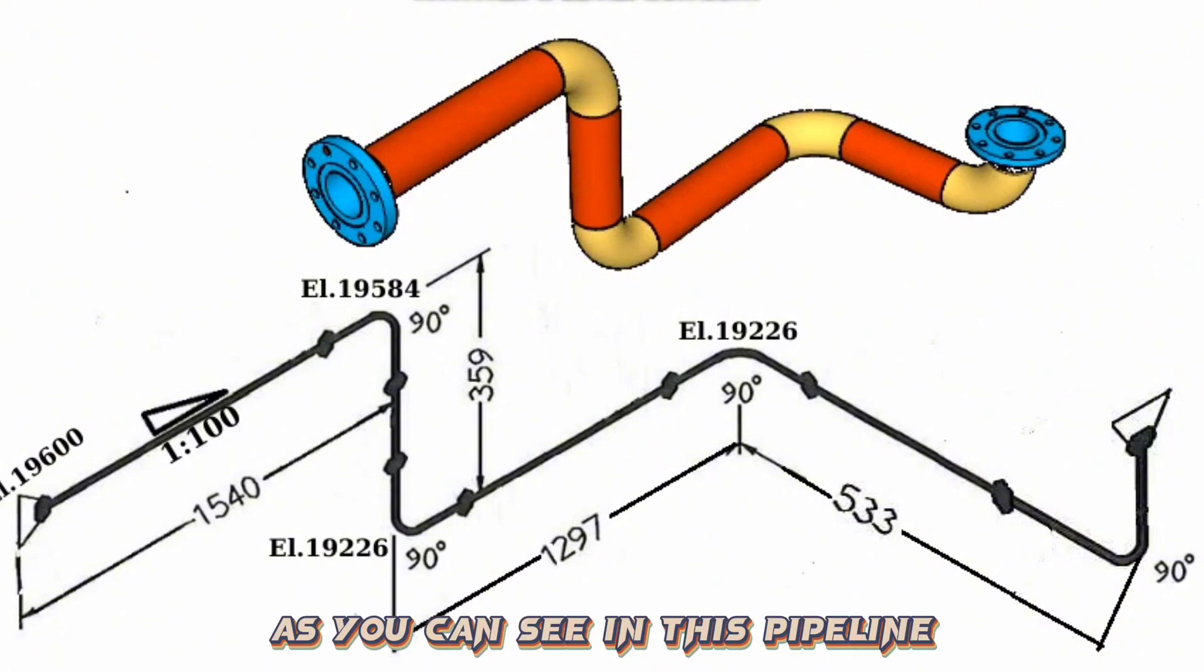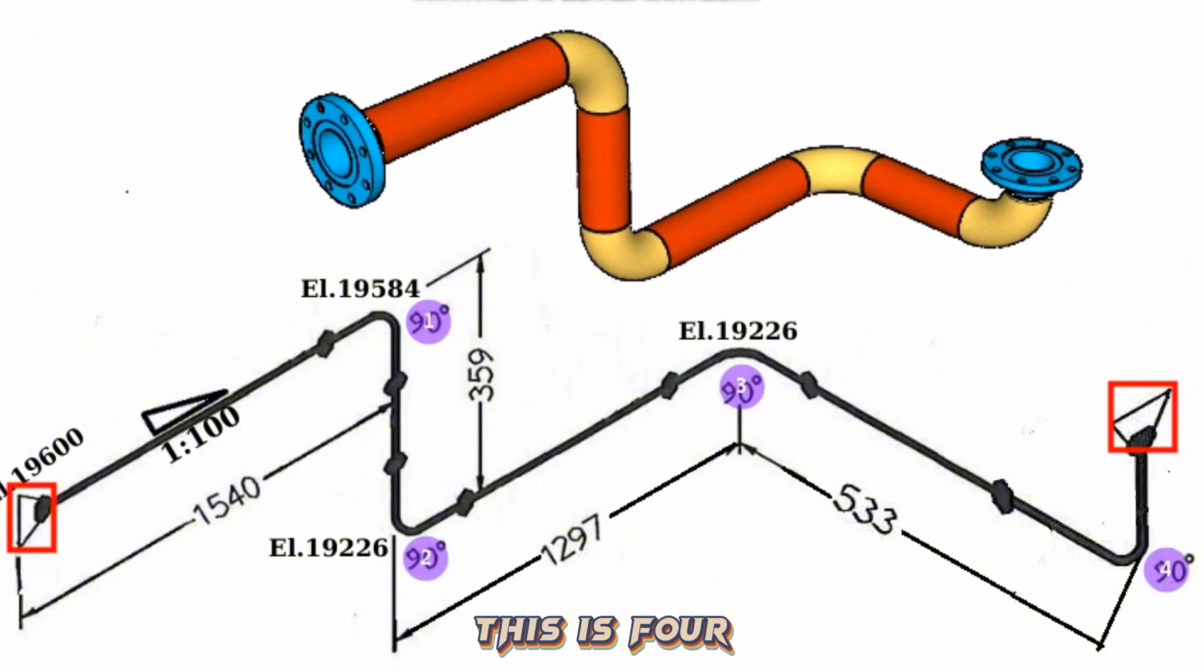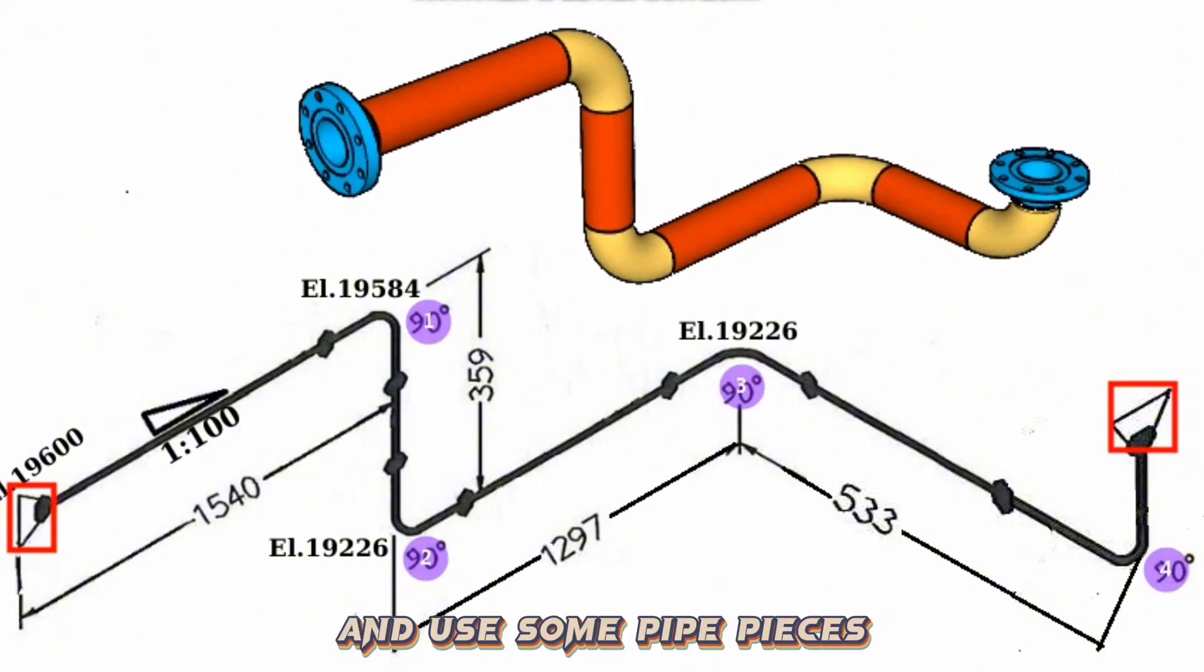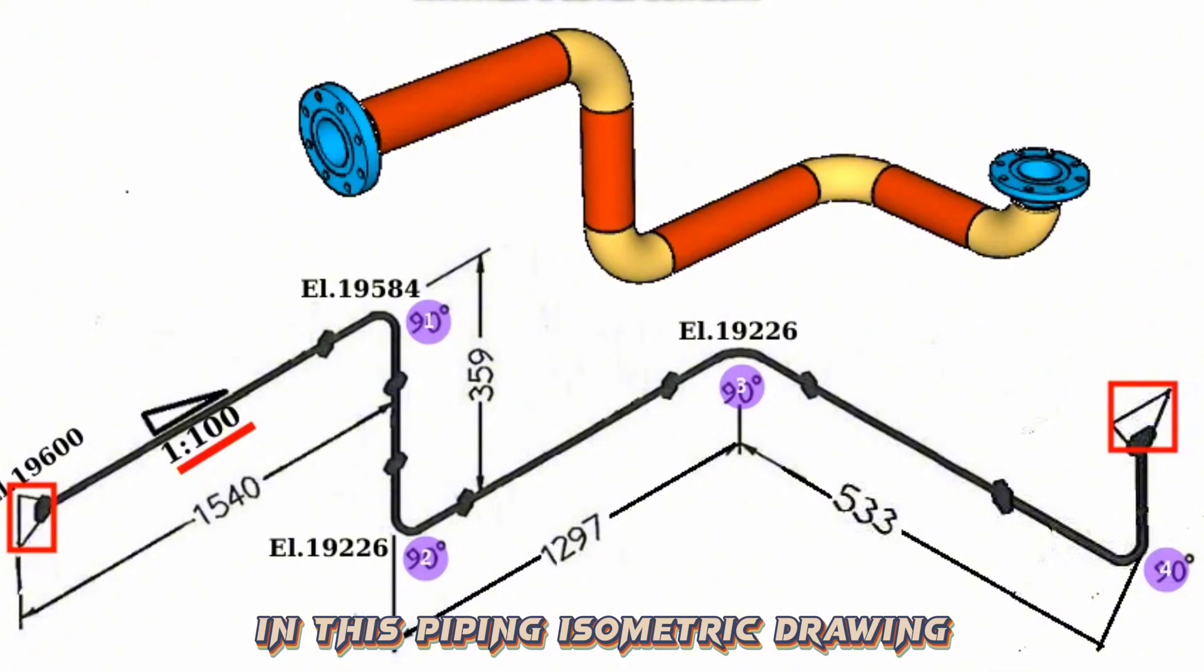As you can see, in this pipeline used two weld neck flanges, this is 1 and this is 2. Four 90 degree pipe elbows, this is 1, this is 2, this is 3, this is 4, and some pipe pieces. Also, there's a 1 to 100 ratio pipe slope in this piping isometric drawing.